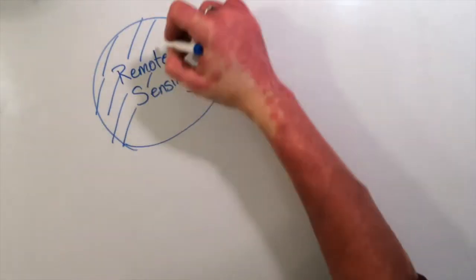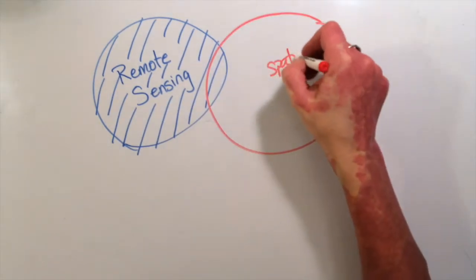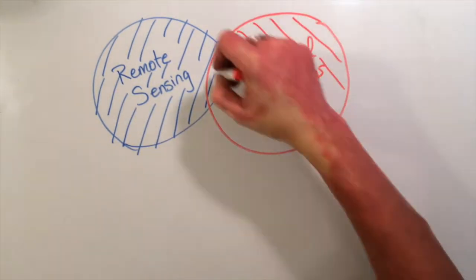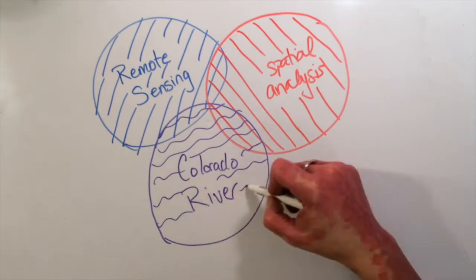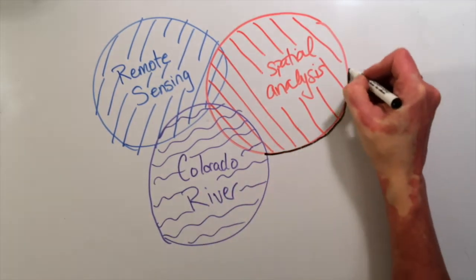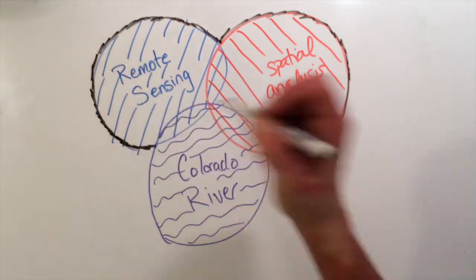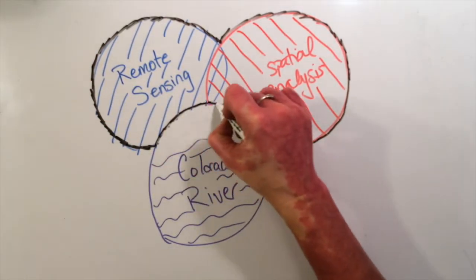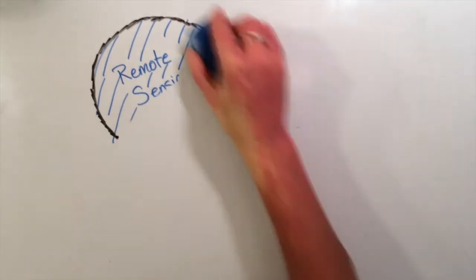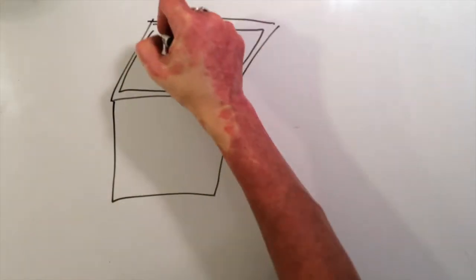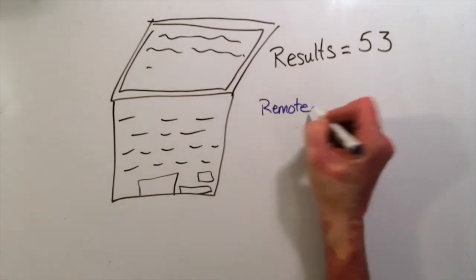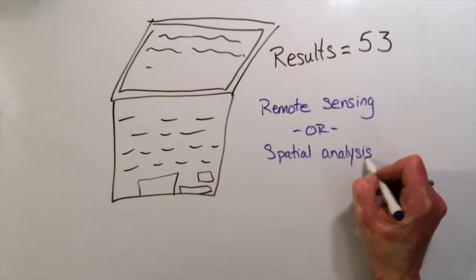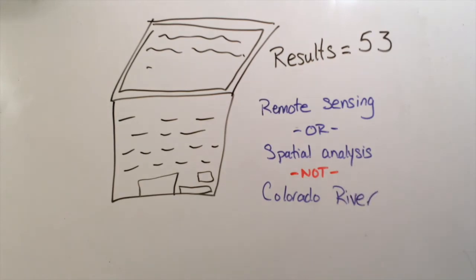What you do is you would do a search on remote sensing OR spatial analysis NOT Colorado River. And what that will do is it will give you, just like before, all the content that has to do with spatial analysis as well as remote sensing. But that NOT Boolean operator, it erases the stuff that has to do with the Colorado River. It takes it out so that you don't have to look at it and you don't have to wade through it. So instead of 5,700 search results, there's another beautiful laptop, you get something along the lines of 53, which you can look through all of those to be sure that you've got a really clear idea of what research is going on in the topic. Remote sensing or spatial analysis NOT Colorado River.